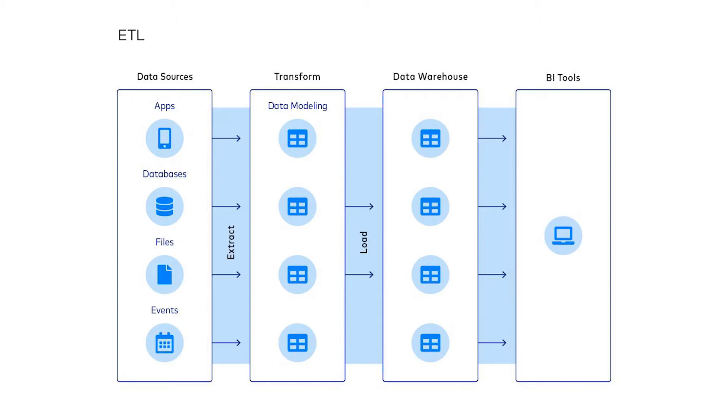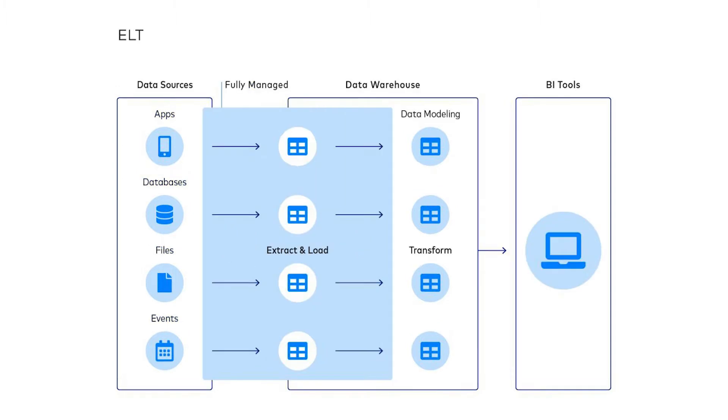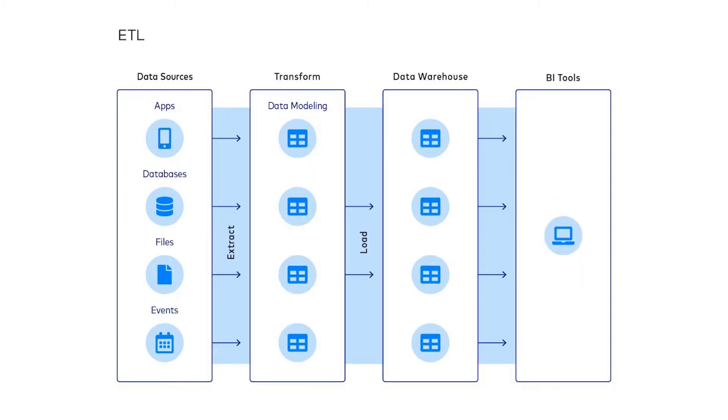In data warehousing, there are two primary ways of transforming data. There is ETL and ELT. ETL — extract, transformation, and load — is the old way of doing things, where you have a tool that takes data from a system and while in flight does transformations, and then loads it into a data warehouse.